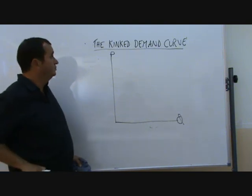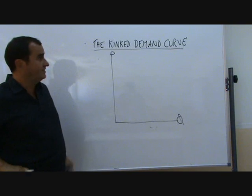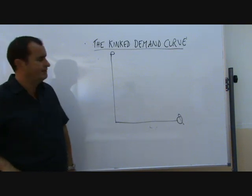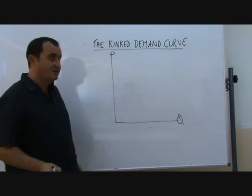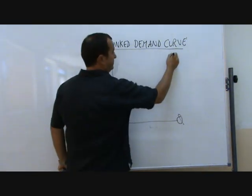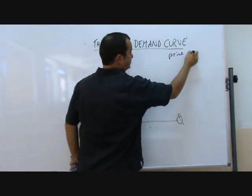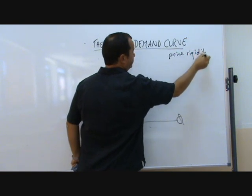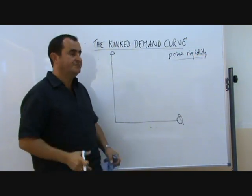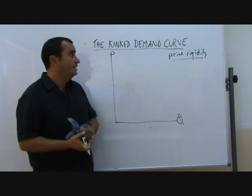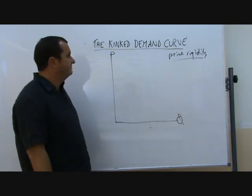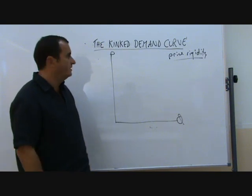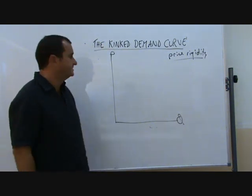In Module 4 you may want to revise the kinked demand curve theory. This is a theory which tries to explain price rigidity, the phenomenon of prices staying the same, staying rigid for some period of time, in oligopolistic markets. The theory was developed in the 1950s by Paul Sweezy from Harvard and it goes like this.